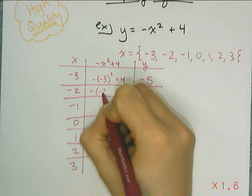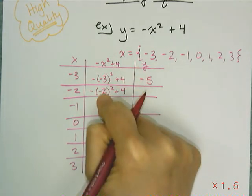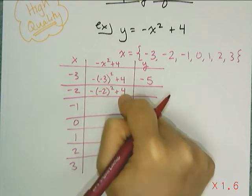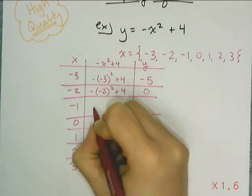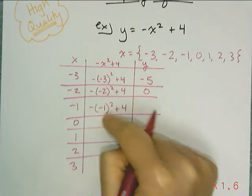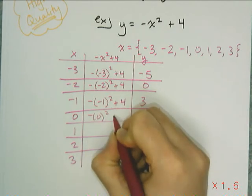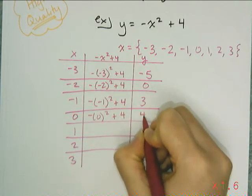And then I do the same thing with negative 2. Negative 2 squared is 4. Negative 4 plus 4 gives me 0. Do the same thing with negative 1. This gives me a negative 1 plus a 4, which gives me a 3. Now 0 is really easy because if I square 0, I get 0, and I add 4 to it and I just get 4.